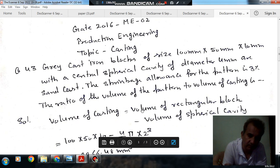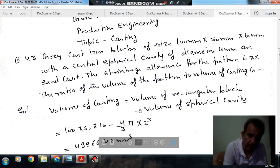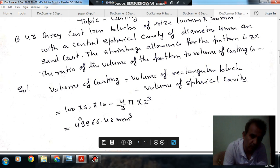Volume of casting is volume of rectangular block minus volume of spherical cavity. Volume of rectangular block is 100 x 50 x 10. Volume of spherical cavity has diameter 4 mm. Volume of sphere is 4/3 π R³. That is volume of spherical cavity. So that will be the volume of casting.